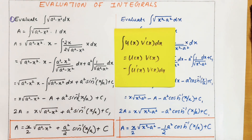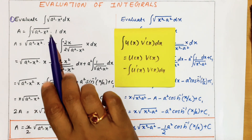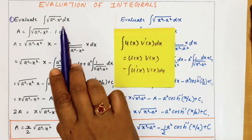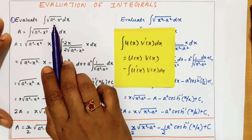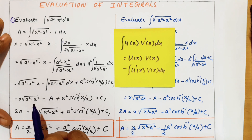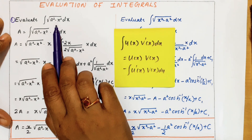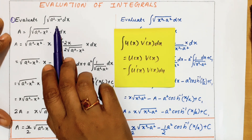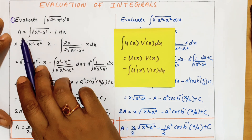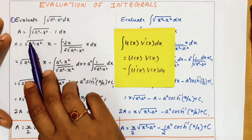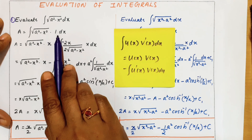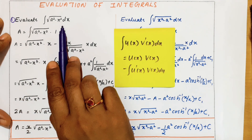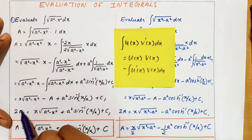See the first question: evaluate integral of √(a² - x²) dx. How we are doing this integral? We are taking this in the form I have taken: I equals integral of √(a² - x²) into 1 dx. Here there is no 1 but we are taking it as 1 dx.